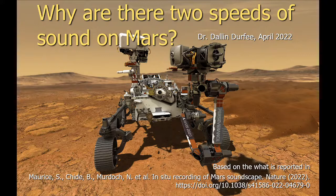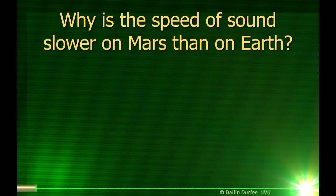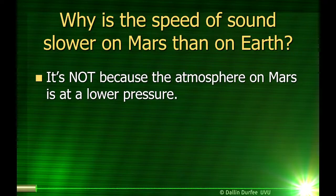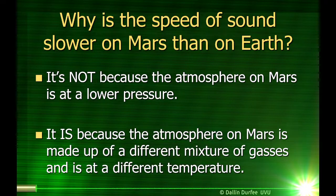What I found in the paper was very different from what most popular science sources were describing. So I wanted to make a quick video to help non-scientists understand why there are two speeds of sound on Mars. Most articles and videos said the speed of sound on Mars is slower because the pressure of the atmosphere is lower. Well, that's not the reason. The speed of sound is slower on Mars because the atmosphere is made up of a different mixture of gases and is at a different temperature.